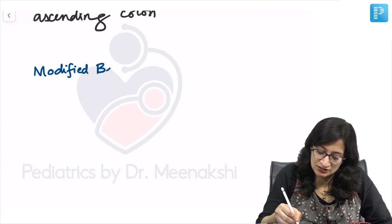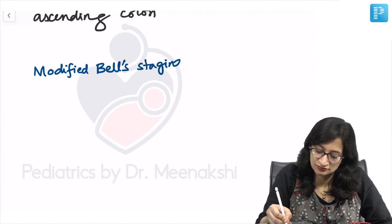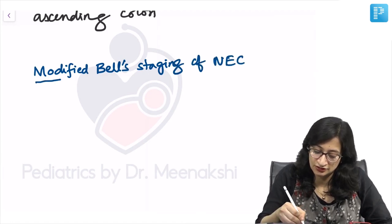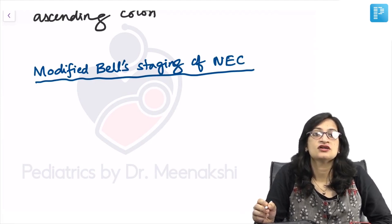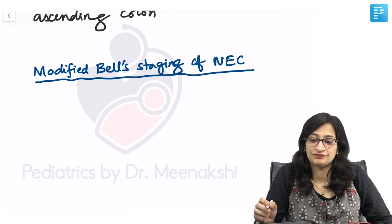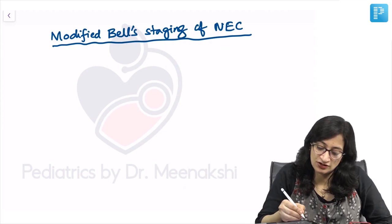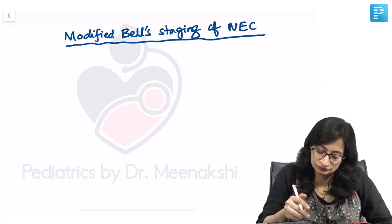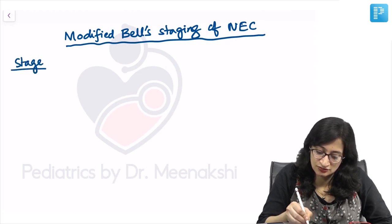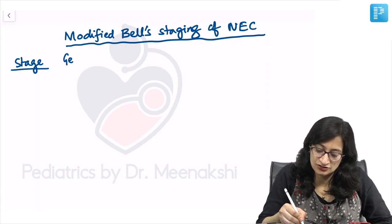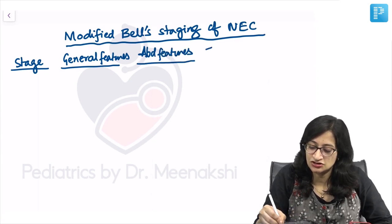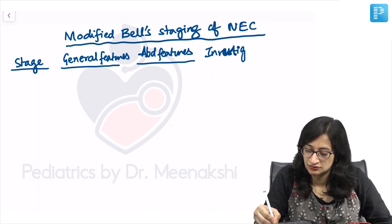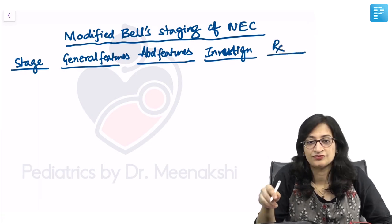Modified Bell's Staging of NEC. There are basically 3 stages of NEC — stage 1, 2, and 3. Each stage has got an A and a B: 1A, 1B, 2A, 2B, 3A, and 3B. The staging covers general features, abdominal features, investigation findings, and the treatment for each stage.